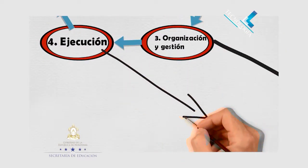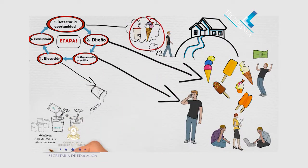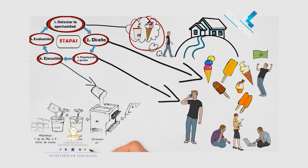La cuarta etapa es la ejecución. En esta etapa se hace la fabricación o elaboración del producto. Digamos que es la conclusión del diseño, siguiendo, claro está, todos los pasos planificados.